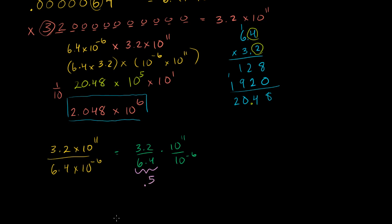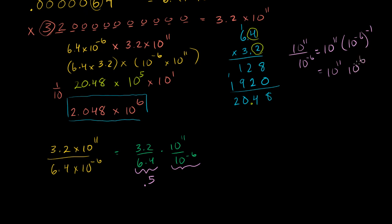And what about 10 to the 11th over 10 to the minus 6? When you have something in the denominator, this is equivalent to 10 to the 11th times 10 to the minus 6 to the minus 1 power, which equals 10 to the 11th times 10 to the 6th — so this equals 10 to the 17th power.